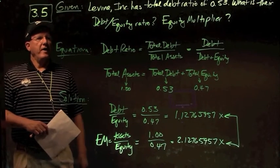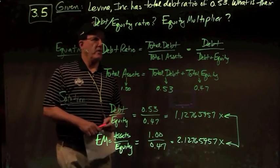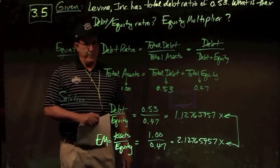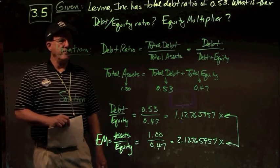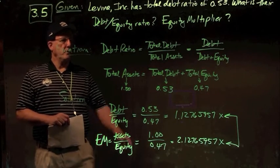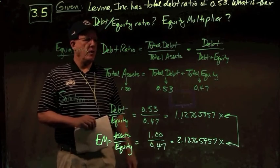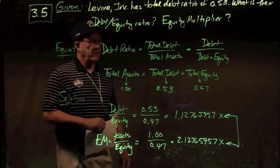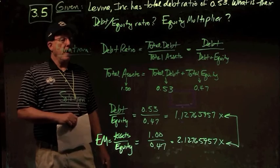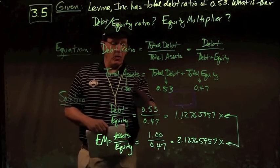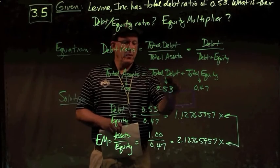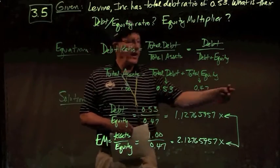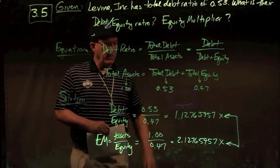In problem 3.5, Levine Incorporated has a total debt ratio of 0.53. What is their debt-to-equity ratio and what is their equity multiplier? The debt ratio of 0.53 equals total debt divided by total assets, and total assets equal debt plus equity. If total assets are 1 or 100%, we have total debt of 53% — which is given — meaning total equity is 47%.